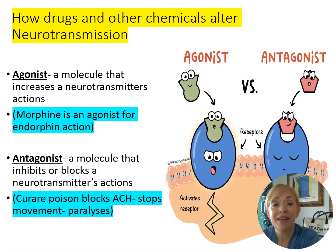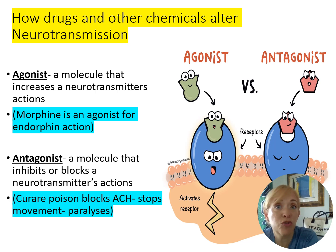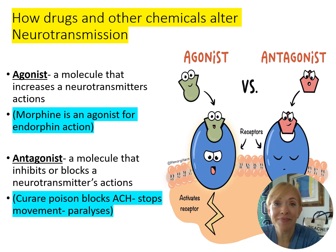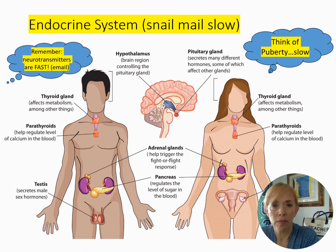Know the difference between an agonist and an antagonist. Agonists are molecules that increase or perpetuate the action of a neurotransmitter. Antagonists are the opposite — molecules that inhibit or block a neurotransmitter's action. Don't get them mixed up.